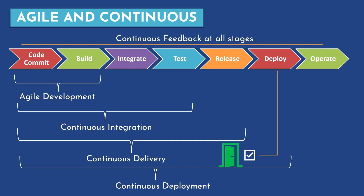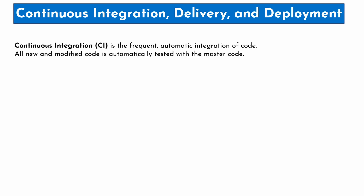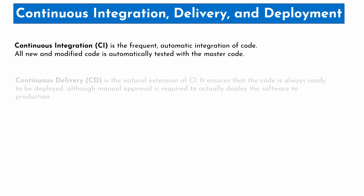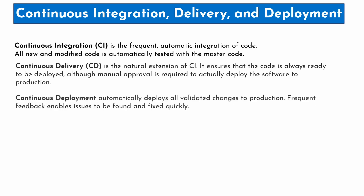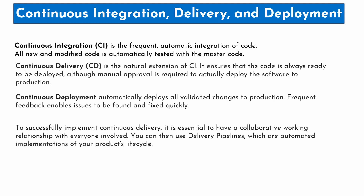Understand the difference between continuous delivery and continuous deployment: delivery involves manual approval before the production deployment, whereas continuous deployment is automated at every step. CI is frequent and automatic integration of code — all new and modified code is automatically tested with the master code. Continuous delivery is an extension of CI; it ensures that code is always ready to be deployed, although manual approval is required to actually deploy to production. Continuous deployment automatically deploys all validated changes to production, and frequent feedback enables issues to be found and fixed quickly. To successfully implement continuous delivery, it is essential to have a collaborative working relationship with everyone involved, and you can then use delivery pipelines, which are automatic implementations of your product's lifecycle.